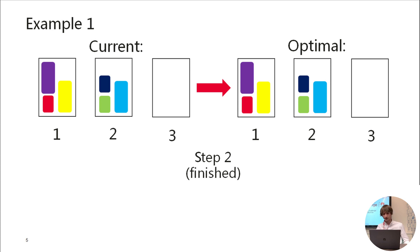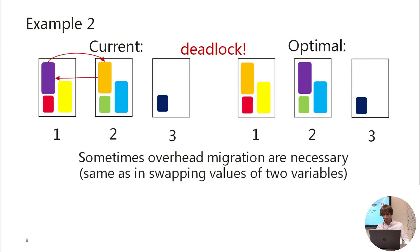Let's consider a more complicated situation in example 2. You can see here that we need to swap the positions of purple virtual machine on the server 1 and orange virtual machine from the server 2. We can consider this a deadlock since there are no enough space on each of these servers to do this directly. So, same as in swapping values of two variables, we need to move some virtual machine to server number 3 and proceed with the final moves. Okay, let's do this.